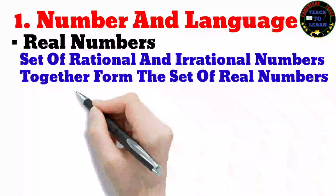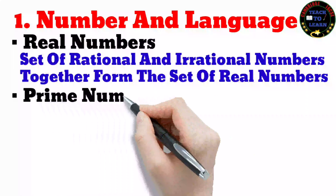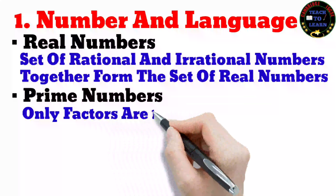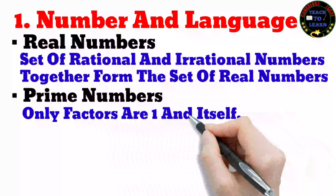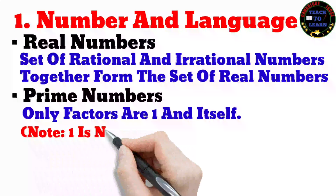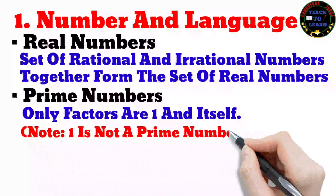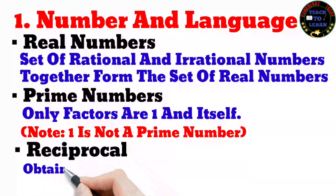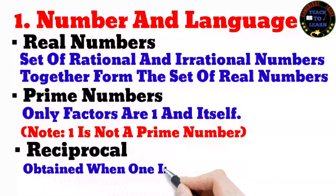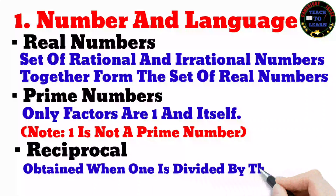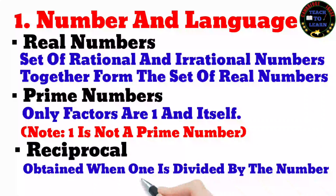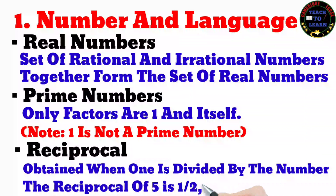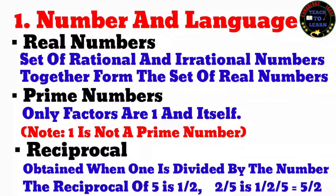Prime numbers: a prime number is one whose only factors are one and itself. Note that one is not a prime number. Reciprocal: the reciprocal of a number is obtained when one is divided by that number. The reciprocal of five is one over five; the reciprocal of two over five is one over two over five, which simplifies to five over two.